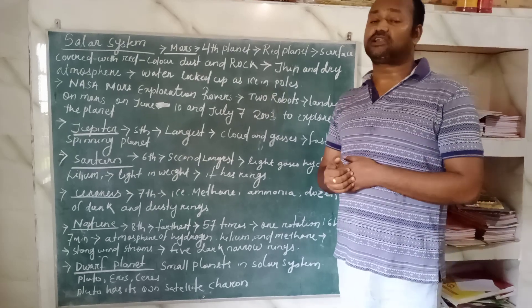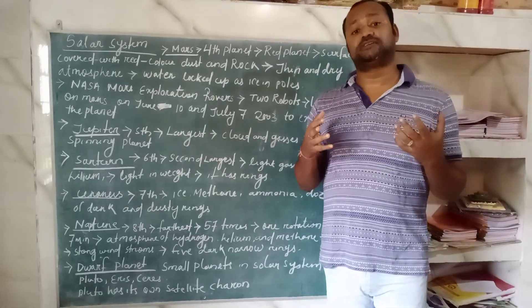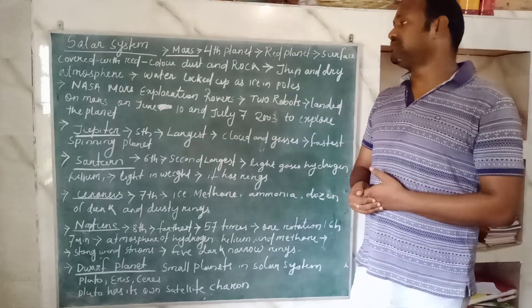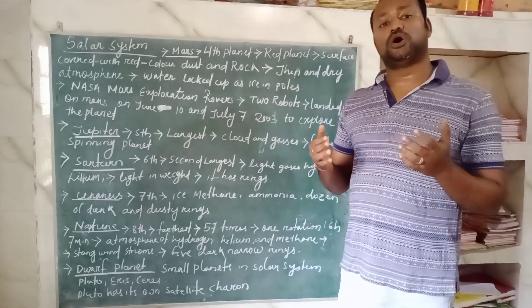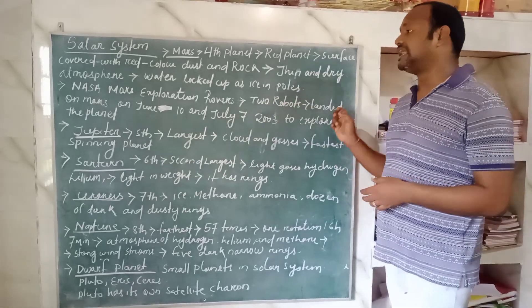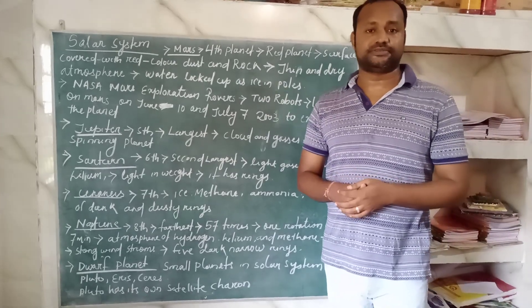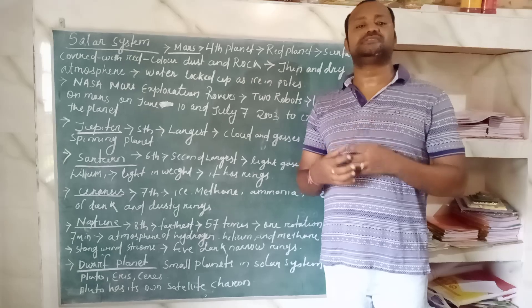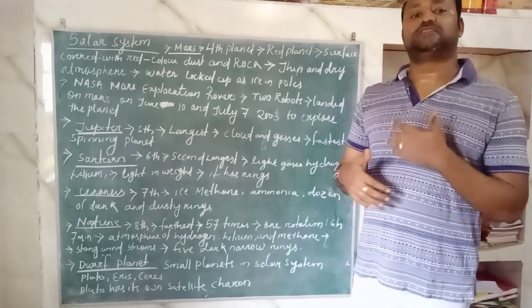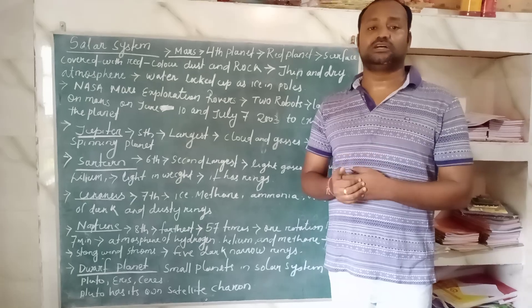Mars has a very thin and dry atmosphere. The water which is present on Mars is only locked in the two poles of Mars. NASA Mars Exploration Rover sent two rovers and landed on Mars on June 10 and July 7 in 2003 to explore the planet. Mars has many essential things required for the survival of living things, but NASA is making many explorations to find out whether living organisms are able to survive on Mars or not.